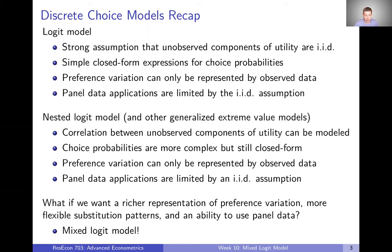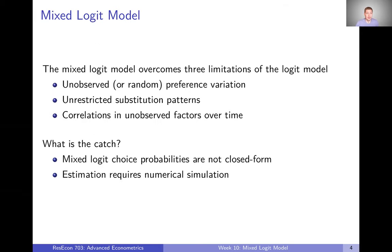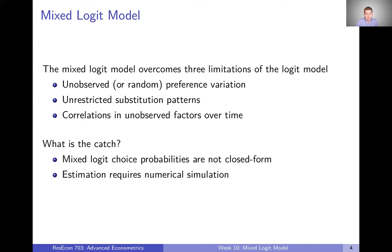But what if we want to allow for a richer representation of preference variation, fully flexible substitution patterns, and an ability to use panel data? Then we want to use the mixed logit model, which is what we're talking about this week. At a high level, the mixed logit model is going to overcome the three big limitations of the logit model — and really the nested logit and other generalized extreme value models as well. We're going to allow for random or unobserved preference variation, highly flexible or unrestricted substitution patterns among alternatives, and correlations in unobserved factors over time that allow for better applications with panel data.